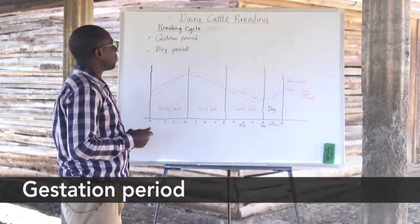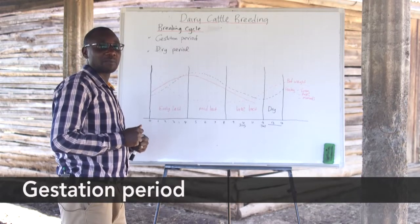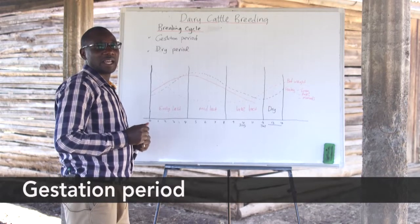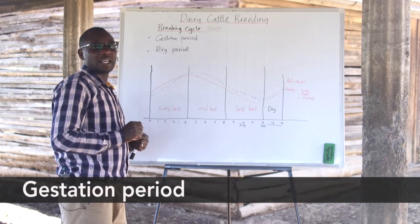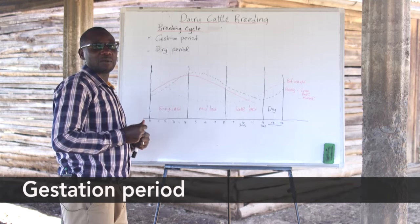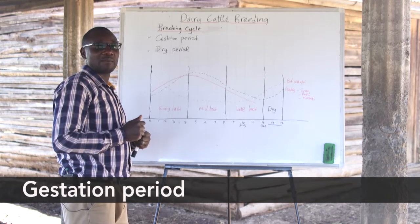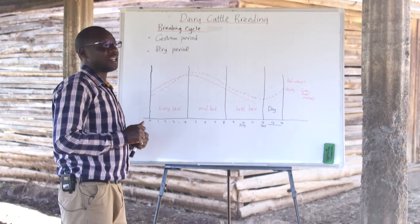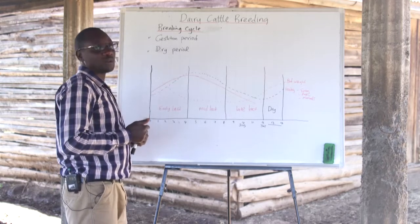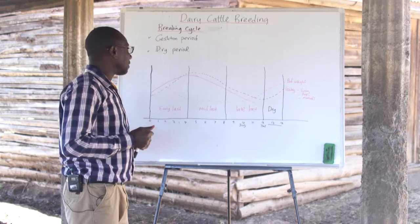During the breeding cycle we also have what we call the gestation period. This is the period that a cow remains from conception to the time the cow calves down, and normally for cattle it is always a period of nine months.